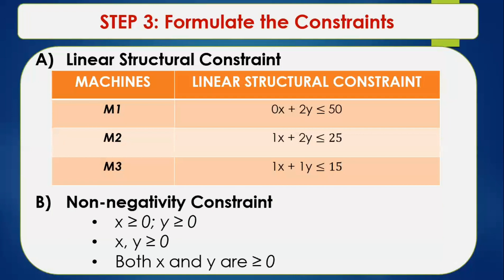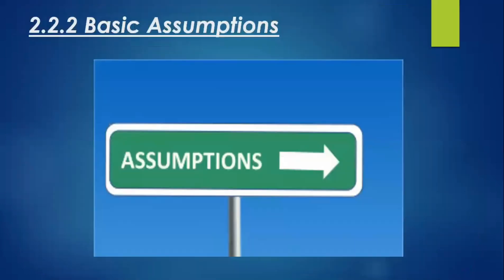The problem now has an objective function, structural constraints, and non-negativity constraints, with a linear relationship between variables and constraints in the form of inequalities. The problem therefore satisfies all properties of a linear programming problem. There are also seven basic assumptions for this type of problem.